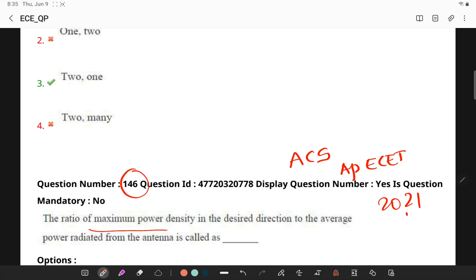What is the ratio of maximum power density in a desired direction to average power radiated from an antenna? This is nothing but directivity.